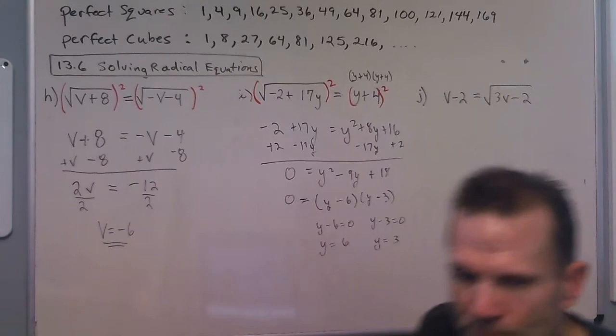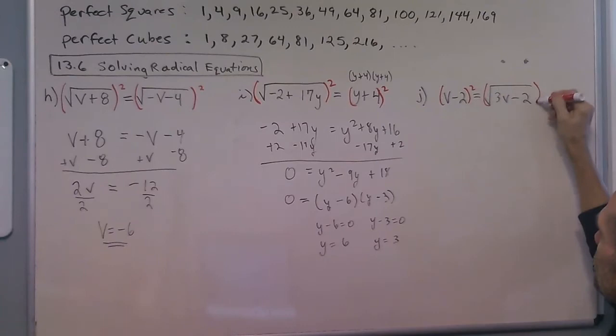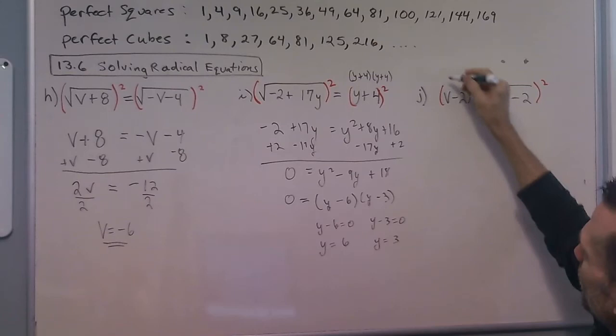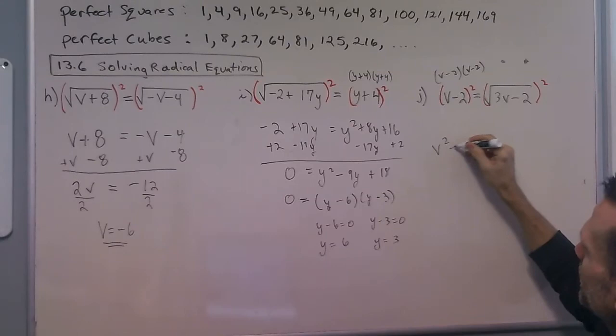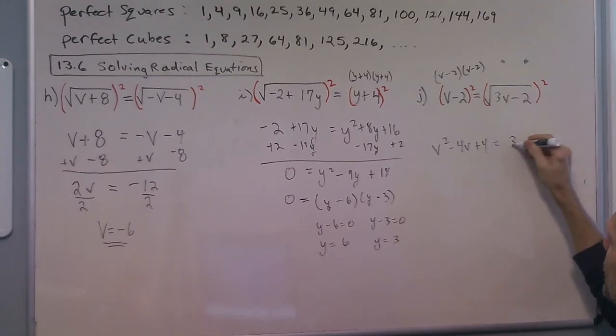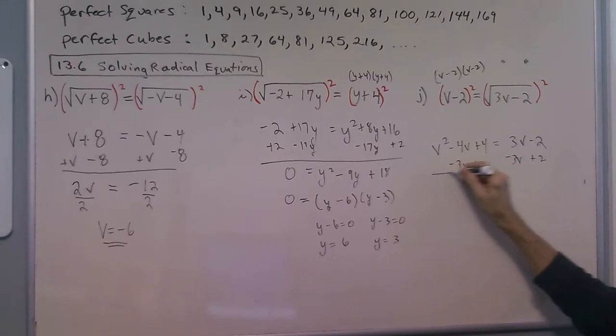So taking a look at this problem, very similar to the last one, we get v minus 2 times v minus 2 here, so we get v squared minus 4v plus 4 equals 3v minus 2. And we'll subtract 3v and add 2 to get all our terms on one side.